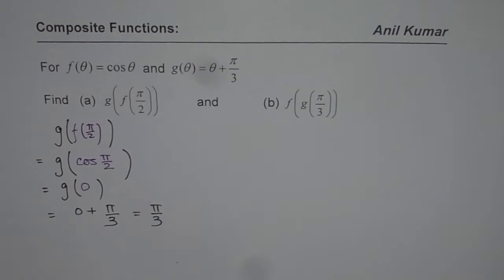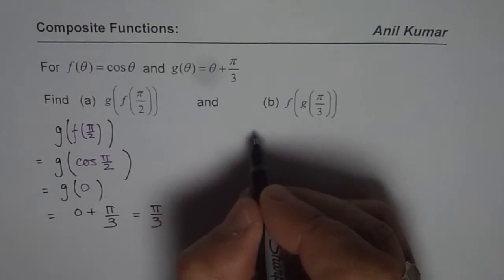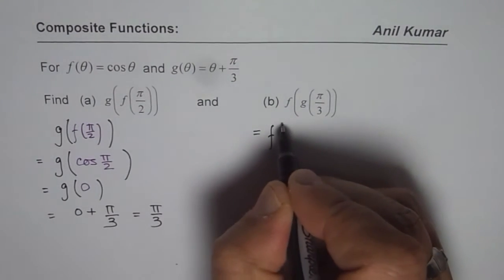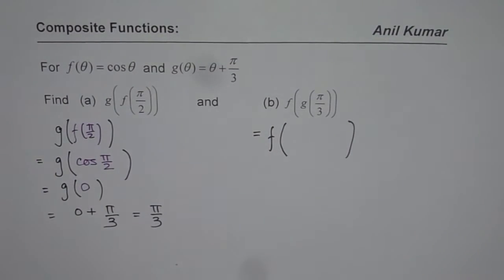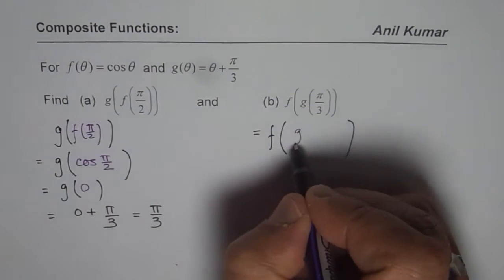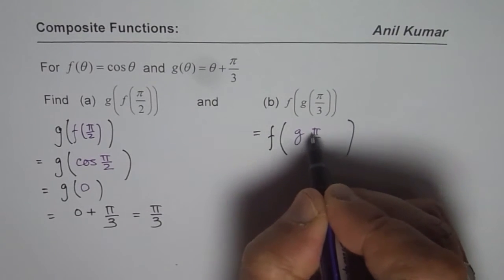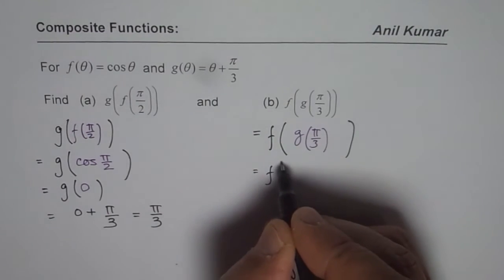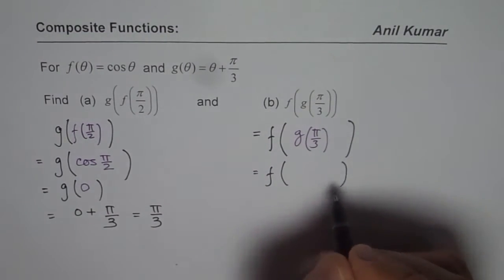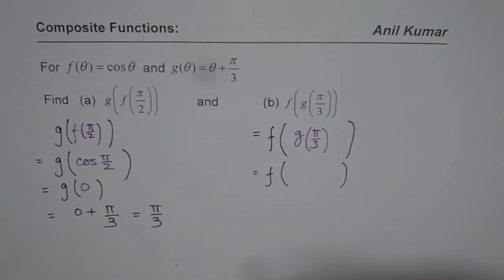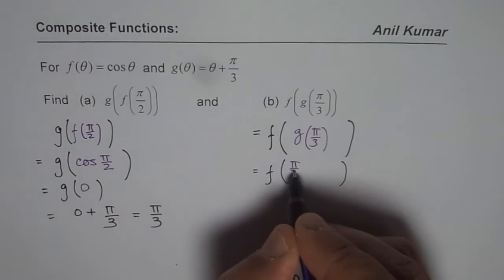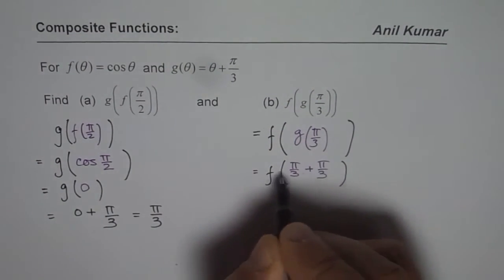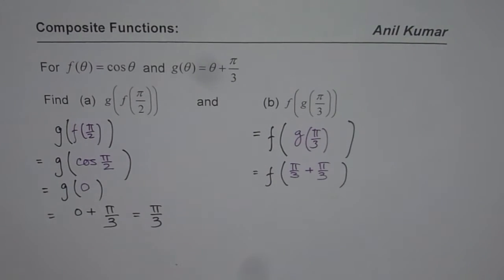I'd like you to pause the video and do the second question on your own. You have to follow exactly the same procedure. Let's do it. We have the function f(g(π/3)). This time g is the inside function which we are going to evaluate first. So we have f of g(π/3), which means I have to replace θ with π/3. So we have π/3 + π/3, which is 2π/3.